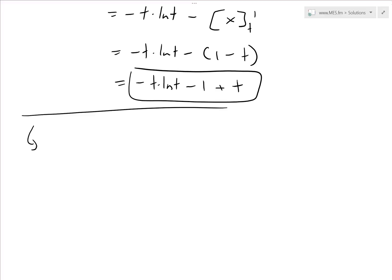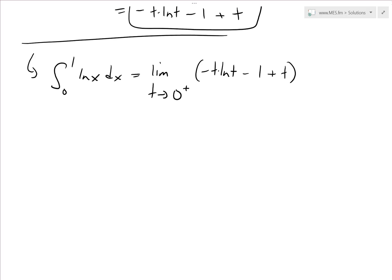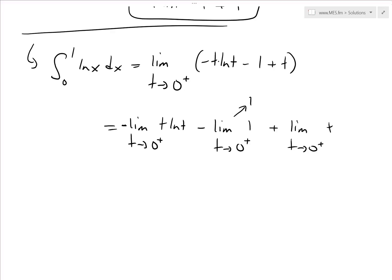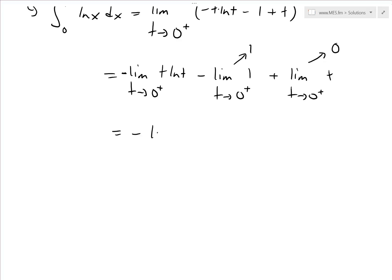Putting it all together, the integral from 0 to 1 of ln(x) dx equals the limit as t approaches 0 from the right side of (negative t · ln(t) minus 1 plus t). We can separate this into three limits: negative times the limit of t · ln(t), minus the limit of 1 (which is just 1), plus the limit of t as t approaches 0 (which is 0). So we're left with negative the limit of t · ln(t), minus 1.